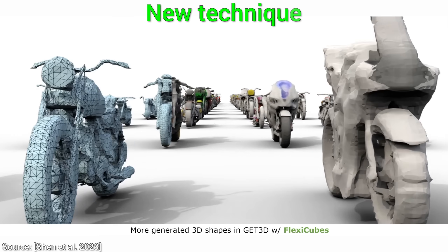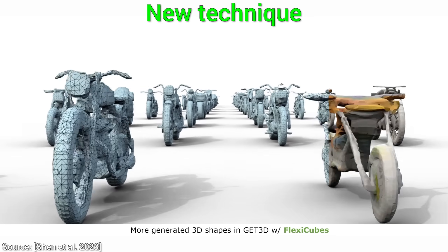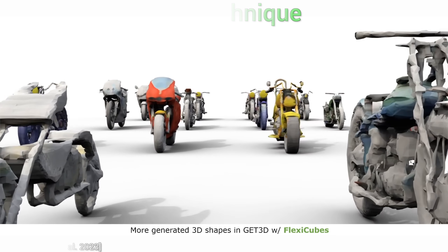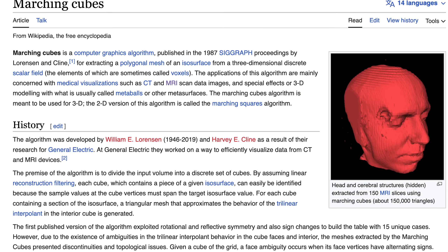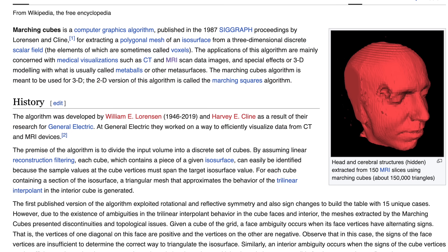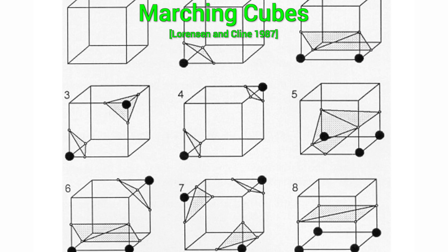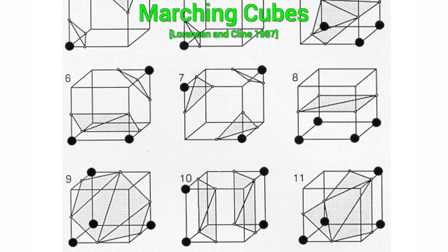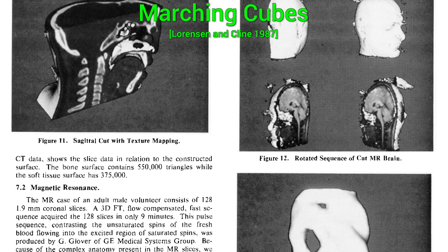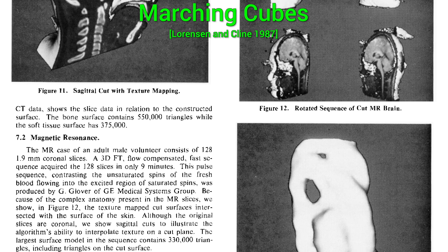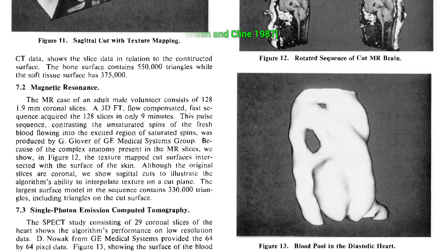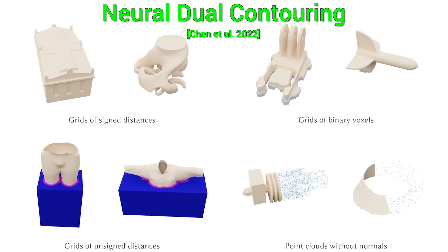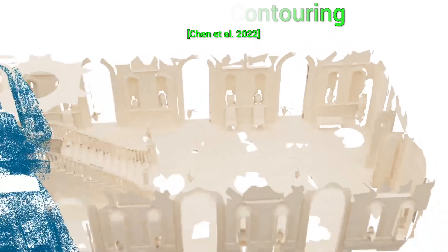Wait — this is not new. In fact, this is old stuff, because this was possible for 36 years now. The legendary computer graphics paper by the name Marching Cubes also set out to do that. It is a simple handcrafted technique, and it can be used for tomography, magnetic resonance imaging, and more. It gives you everything you want. Or Neural Dual Contouring — a paper from just a year ago. So why not just use them?